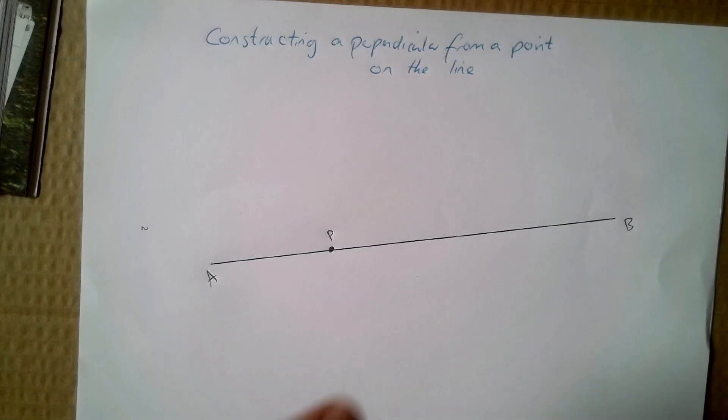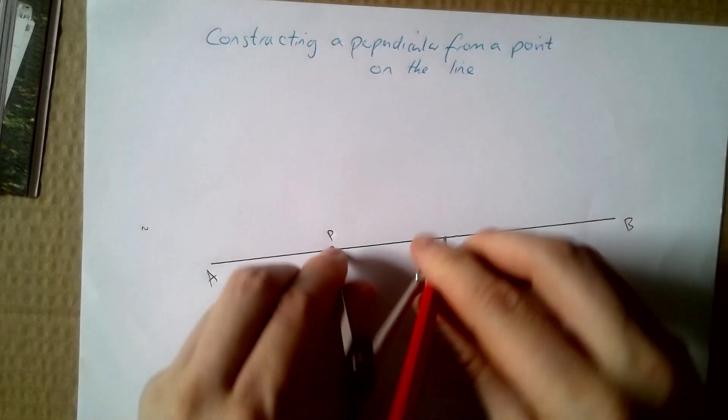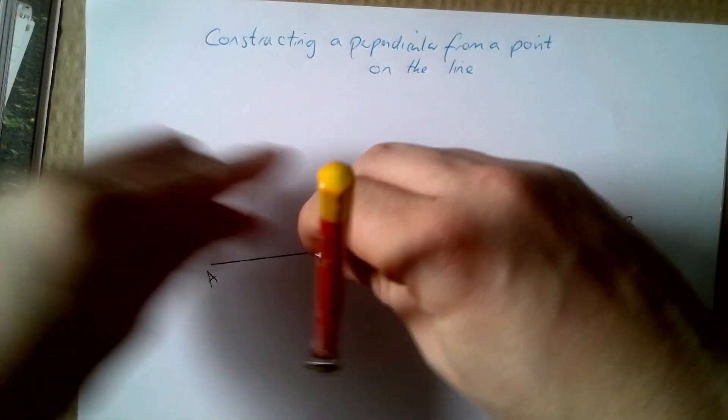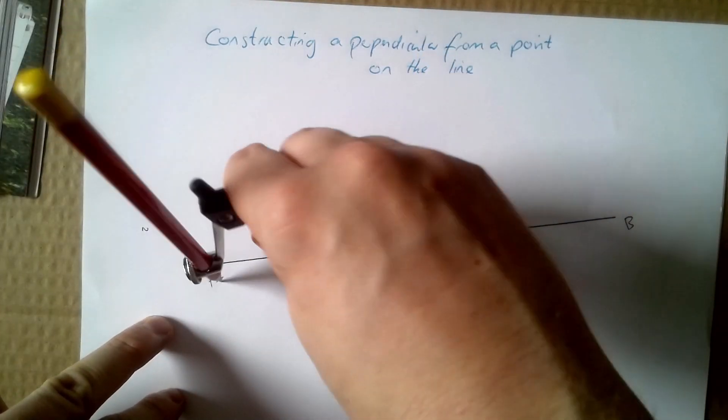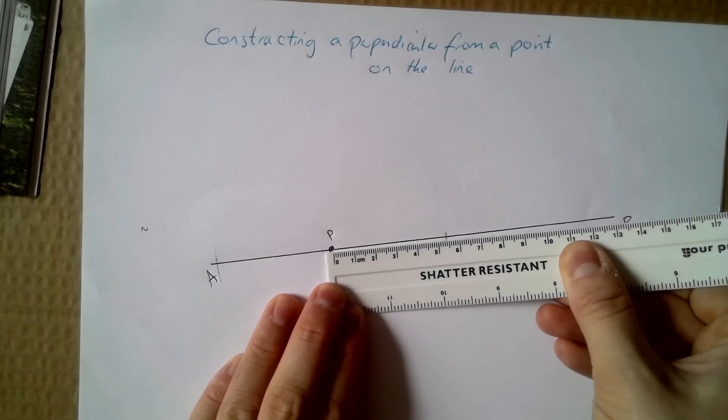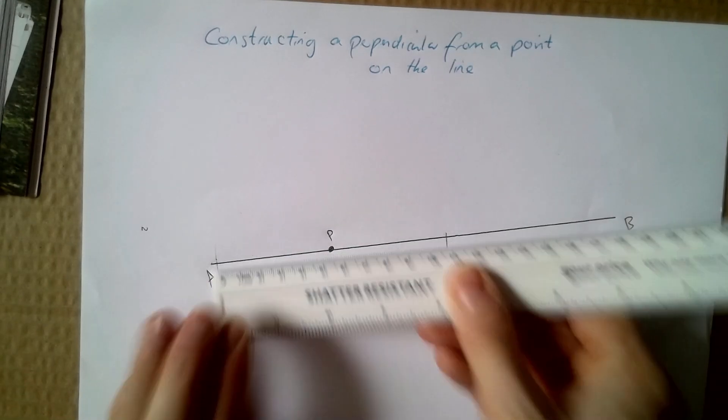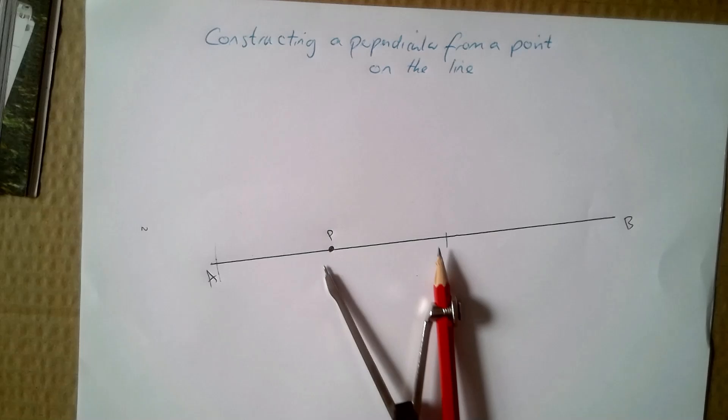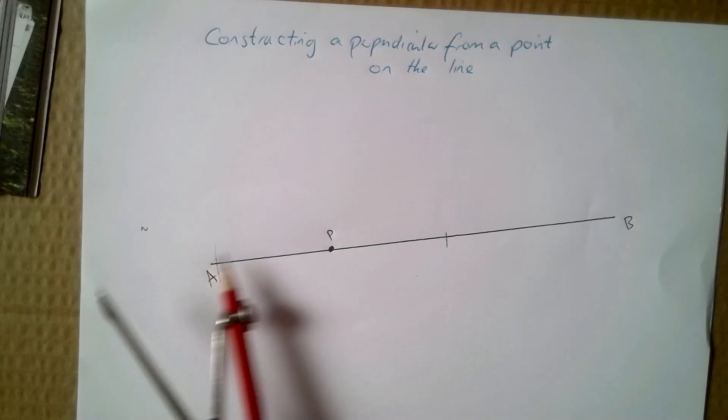I'm going to start at P and draw an arc on each side. Now it has to cross AB at the same distance. So if I were to measure that, I don't need to. That's about five and a half. That's five and a half.